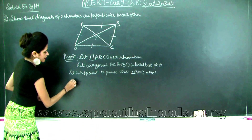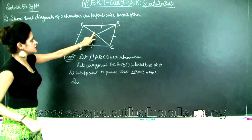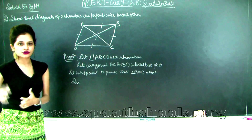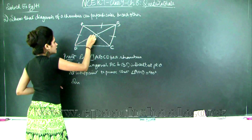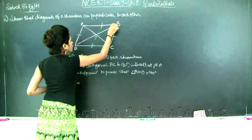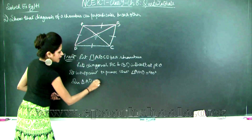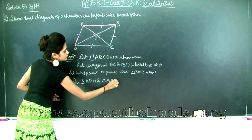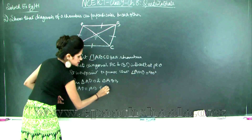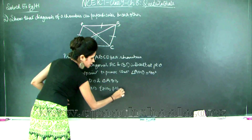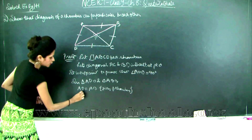Since these two angles would be 90 degrees through linear pair if one angle is 90 degrees, I will take two triangles whose bases form a linear pair. Consider triangle ADO and triangle ABO and let us prove them congruent. In triangle ADO and triangle ABO: AD equals AB because all sides of a rhombus are equal, and AO equals AO as the common side.